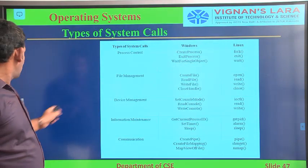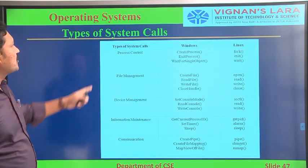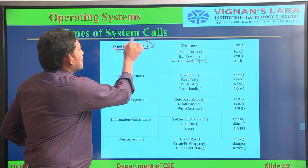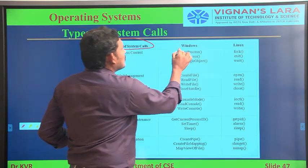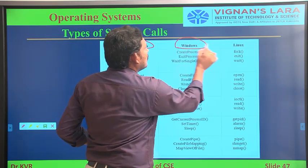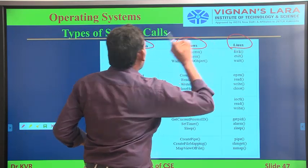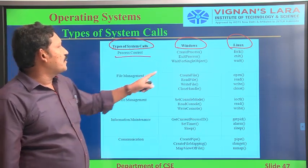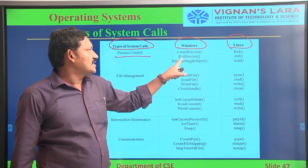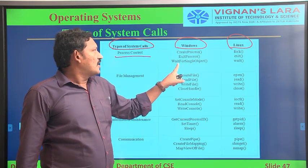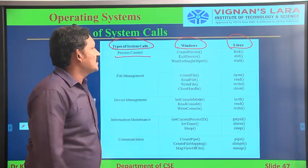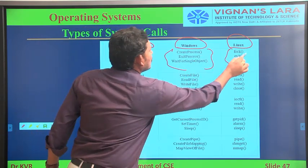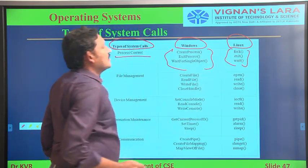Now we will see examples for these system calls — what commands we use in Windows and what commands we use in Linux. Coming to the first one, process control: for creating a process in Windows we use 'CreateProcess', 'ExitProcess', and 'WaitForSingleObject'. In Linux we use 'fork', 'exit', and 'wait'.